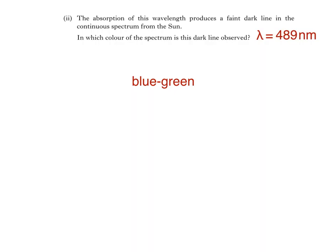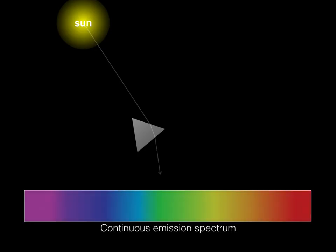This animation shows how, if we were to pass the light from the sun through a prism, it would appear as a continuous emission spectrum. That is, as long as we were to ignore the effects of the sun's outer atmosphere.